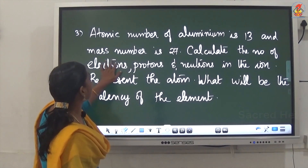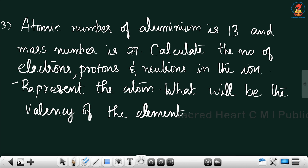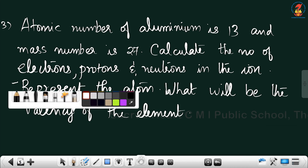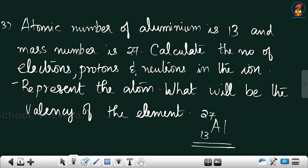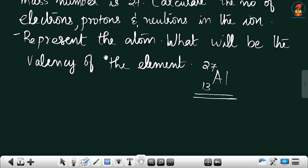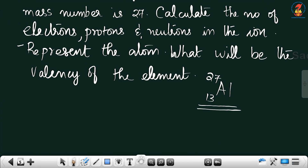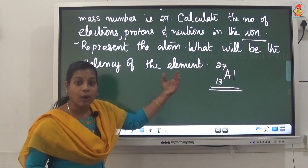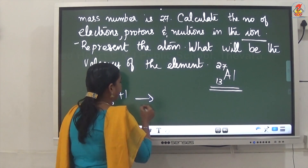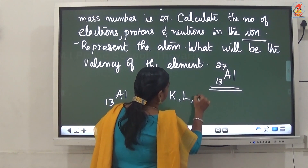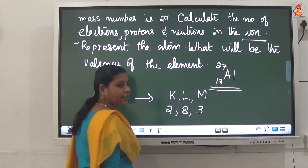Next question: atomic number of aluminium is 13 and mass number is 27. Calculate the number of protons, electrons, and neutrons in the ion. To solve this, we should know what type of ion aluminium forms. The electronic configuration of aluminium (Z=13) is 2, 8, 3.